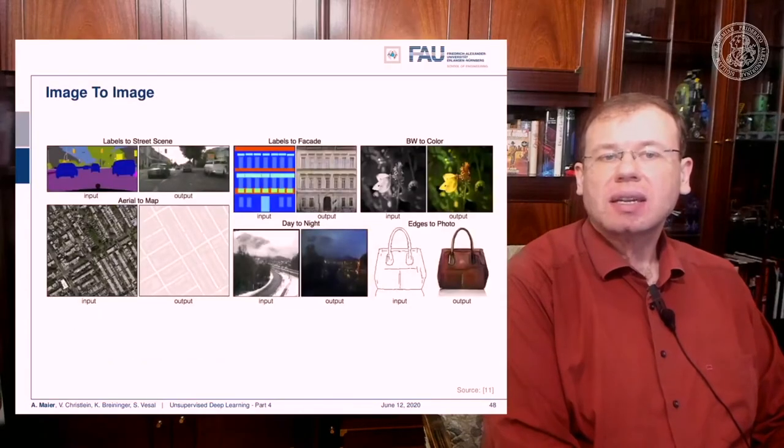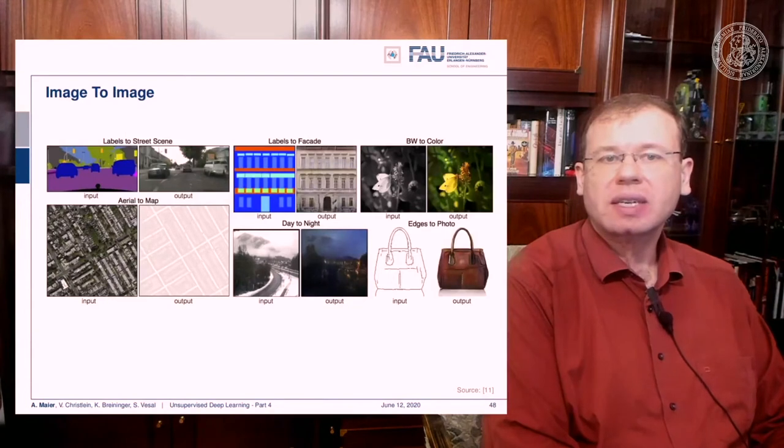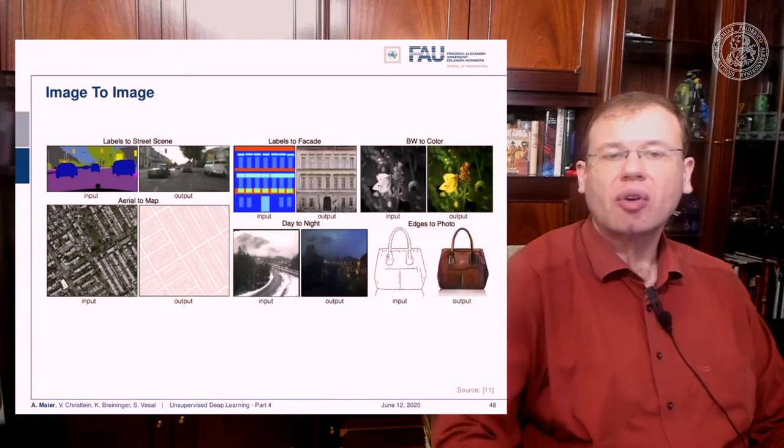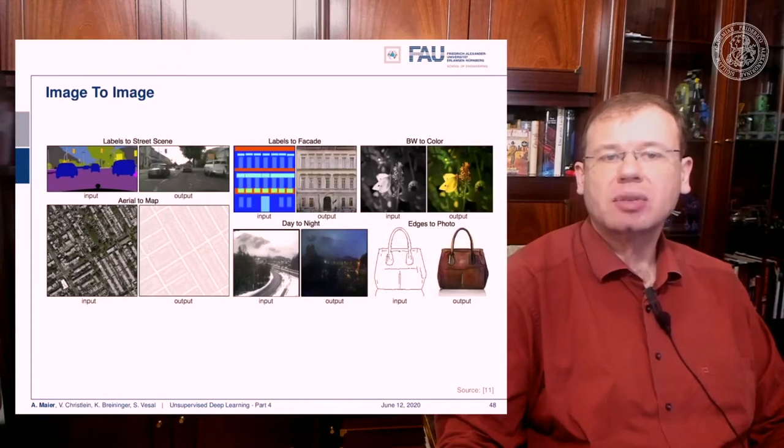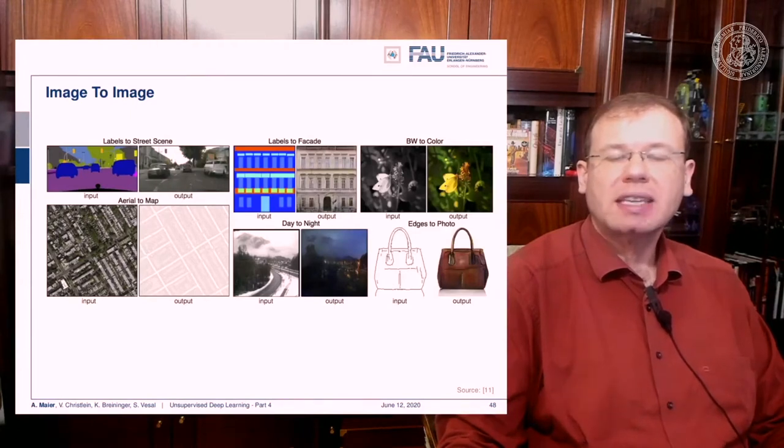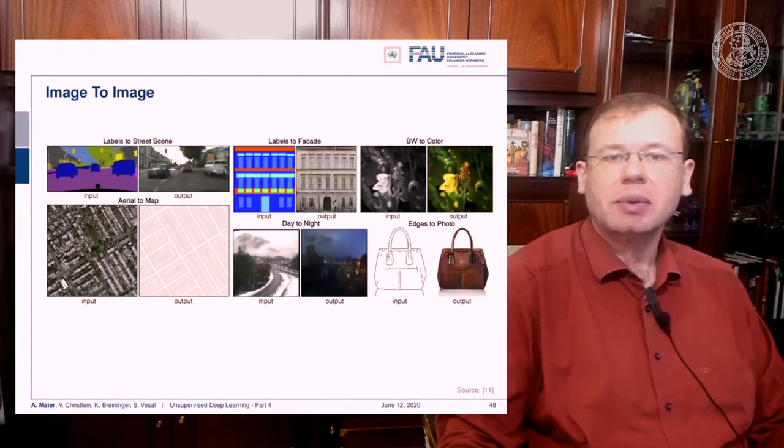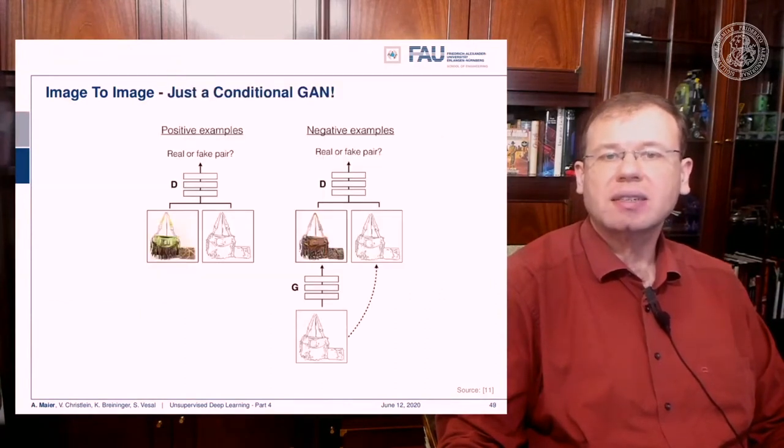This allows them to create really nice things like image-to-image translation. Here are several examples for inputs and outputs: you can create labels to street scene, you can generate aerial to map, labels to facade, black and white to color, day to night, edges to photo. The idea here is that we use the label image as a conditioning vector.